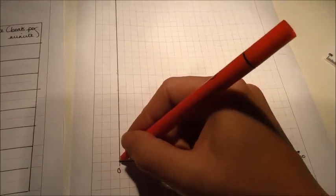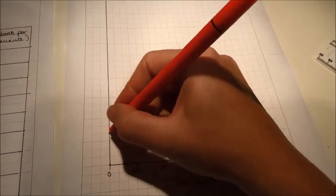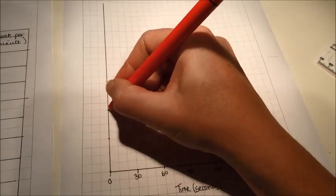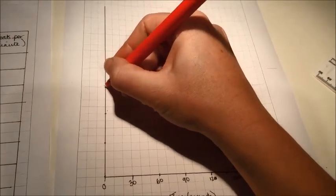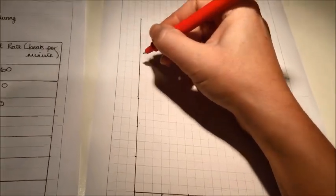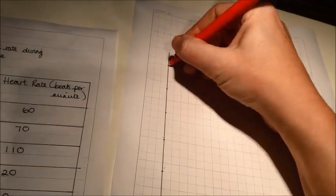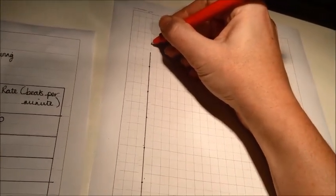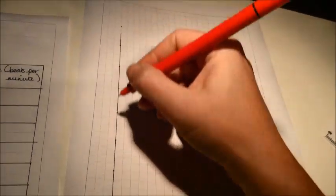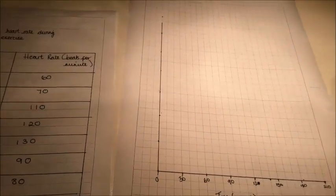So every four squares: 0, 20, 40, 60, 80, 100, 120. Well, we could go a little bit further and go up to 140, and that would have all of our information on it. So let's do that then.